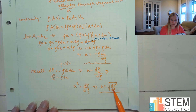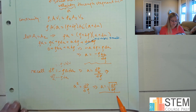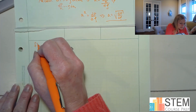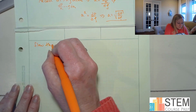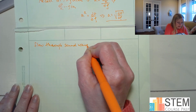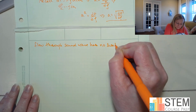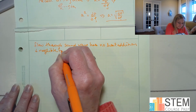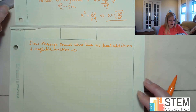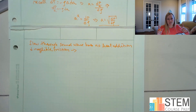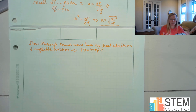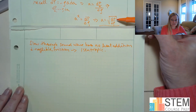Now I want to get rid of these differential terms. Let's note that flow through a sound wave has no heat addition and negligible friction. That sounds like isentropic flow — so we're going to assume isentropic conditions here, and that's going to allow us to get an easier equation that we can actually plug numbers into.